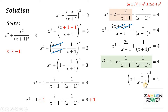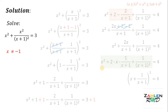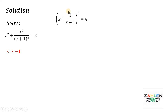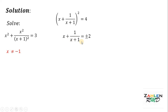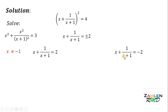Now let's focus on this result. We have x plus 1 over x plus 1, quantity squared, equals 4. Taking the square root of both sides, we get x plus 1 over x plus 1 equals positive or negative 2. Therefore, we have two cases: the first is x plus 1 over x plus 1 equals 2, and the other case is x plus 1 over x plus 1 equals negative 2.